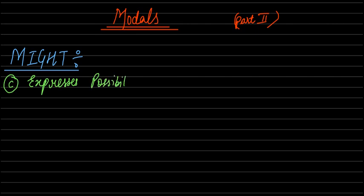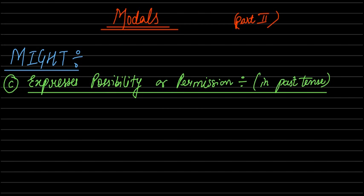In the previous video Future Possibility what are we talking about? Normal present, future possibility, permission. In past tense, might possibility or permission express in past tense. Okay first sentence.